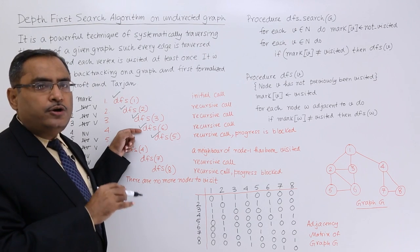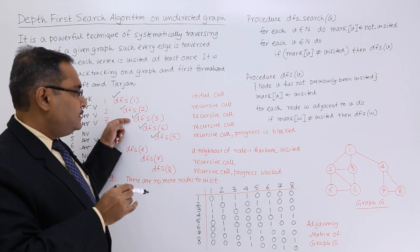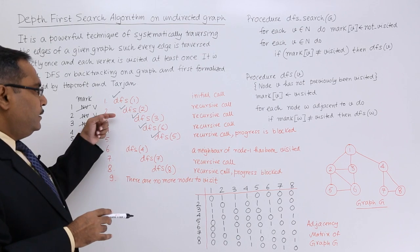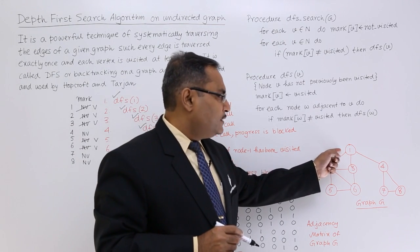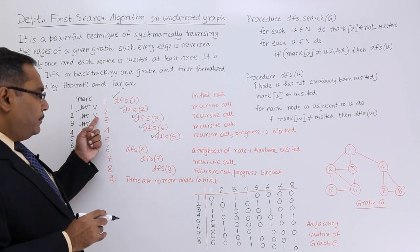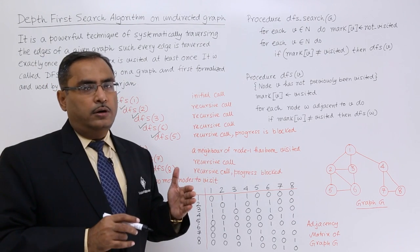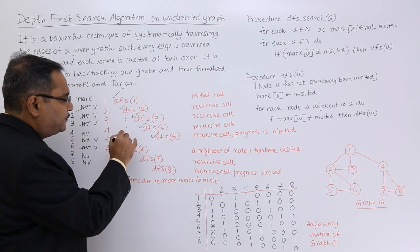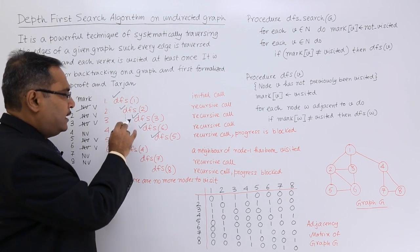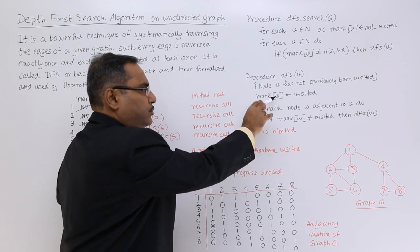Node 6 has no unvisited adjacent nodes, so it backtracks to DFS(3). DFS(3) also has all adjacent nodes visited, so it comes back to DFS(2). DFS(2) also has all adjacent nodes visited, so control returns to DFS(1). For DFS(1), nodes 2 and 3 are visited, but node 4 is not. So DFS(4) is called — shown at the same indentation as DFS(2) — and mark of 4 becomes visited.